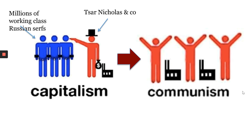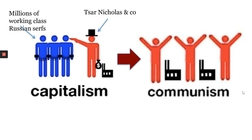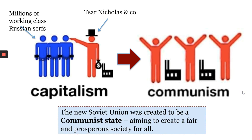Lenin believed that this situation was wrong and he wanted to move over to the situation on the right — communism. Everyone in this situation is equal. They all own all the money and all the land equally and everyone takes a fair share. The new Soviet Union was created to be a communist state, aiming to create a fair and prosperous society for all. So the ambition was for Russia to be ruled in a completely different way after 1917 than it had been before.